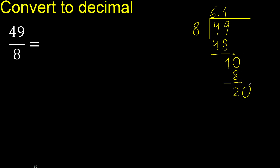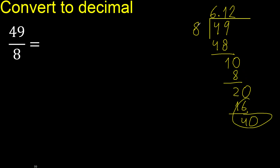There is no next number, therefore complete with 0. Bring down to make 20. 8 multiplied by 3 is greater, 8 multiplied by 2 is 16. Subtract to get 40. 8 multiplied by 5 is 40. 40 minus 40 is 0. Therefore finish.